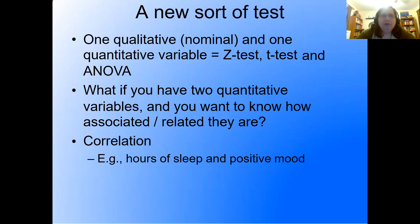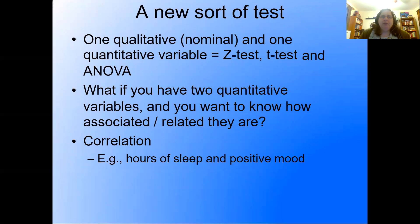So far we have had one qualitative or nominal variable and one quantitative variable for all of our tests — that's the Z test, all of the T tests, and the ANOVAs. We had one qualitative nominal variable as our independent variable and one quantitative or continuous variable as our dependent variable.